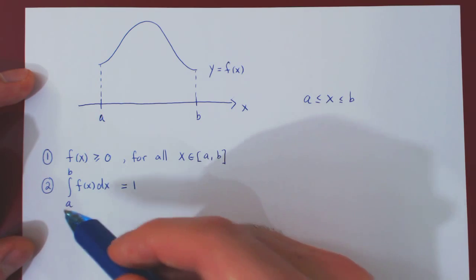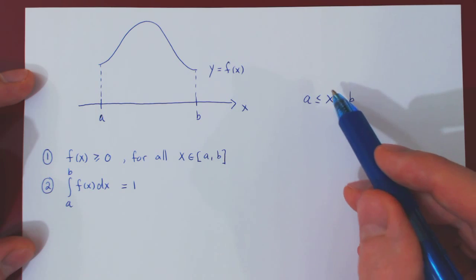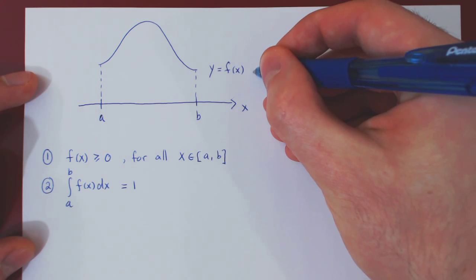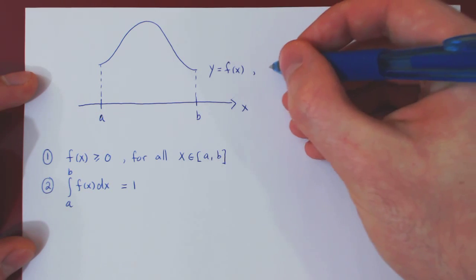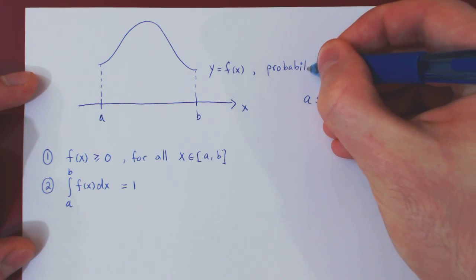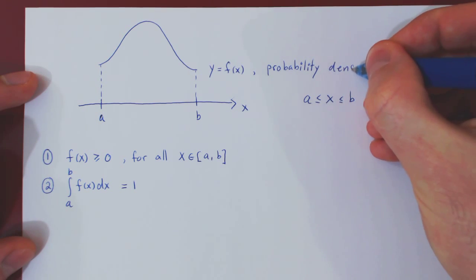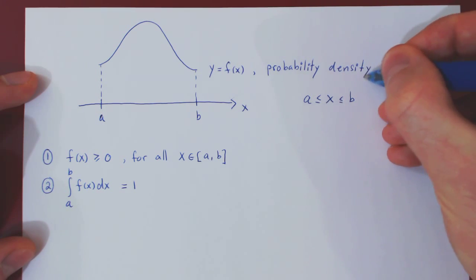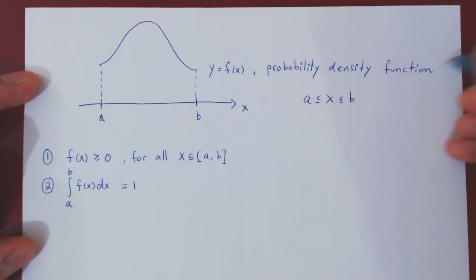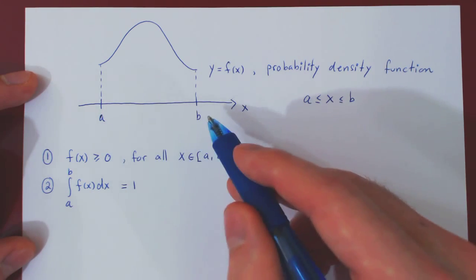If both conditions are met, we say that f(x) is a probability density function for the continuous random variable x on the interval from a to b.